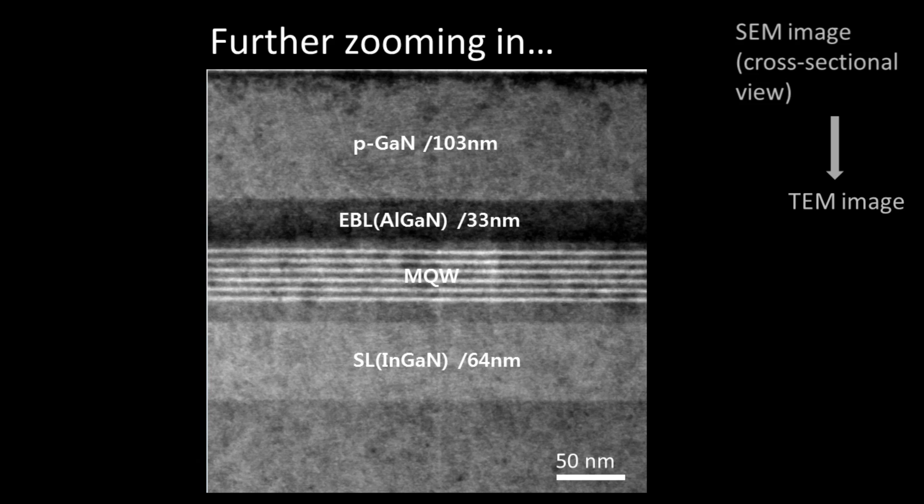The charge carriers will come in from above and below, the positive and the negative charge carriers, and they'll become trapped in that region. Where they're trapped, they'll be forced to meet one another and combine, and where they combine is where the light's given out.